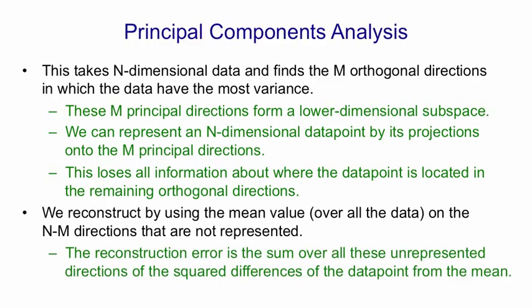And then the error in our reconstruction would be the sum over all these unrepresented directions of the squared difference between the value the data point had on that direction and the mean value on that direction. This is most easily seen in a picture.